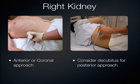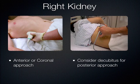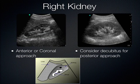How do you actually scan the kidney? You place the probe either in a coronal or anterior location, or turn the probe into a more posterior approach looking between the ribs posteriorly. It all depends on the patient's body habitus — sometimes you get better views coronally, sometimes posteriorly.